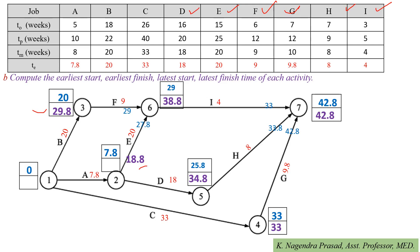For activity D, latest finish time = 34.8 and latest start time = 34.8 − 18 = 16.8. Observe that event 2 is a burst event for activities E and D. Among these two values, we consider the minimum start time, which is 16.8. So latest start time at event 2 is 16.8. For activity C, latest finish time = 33 and latest start time = 33 − 33 = 0. For activity B, latest finish time = 29.8 and latest start time = 29.8 − 20 = 9.8.